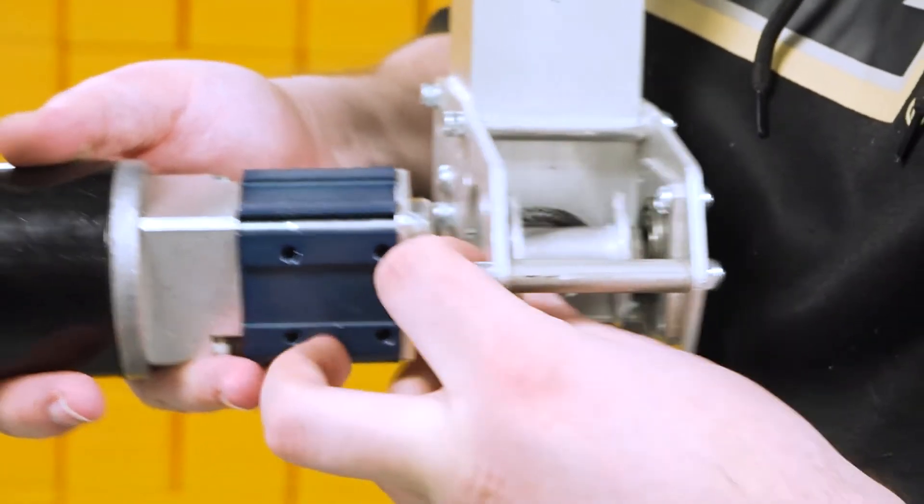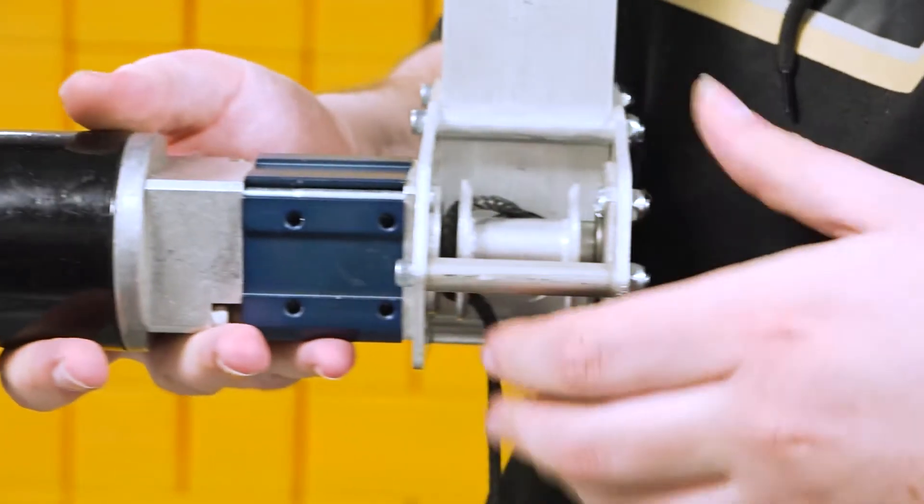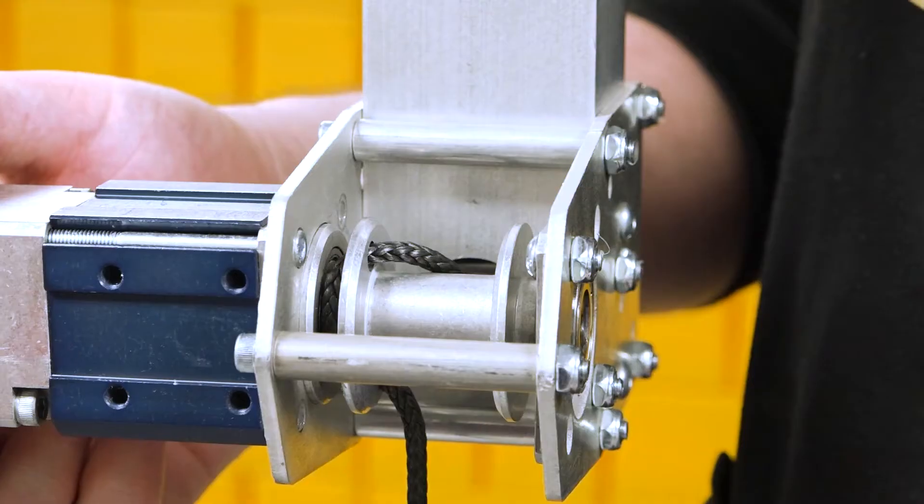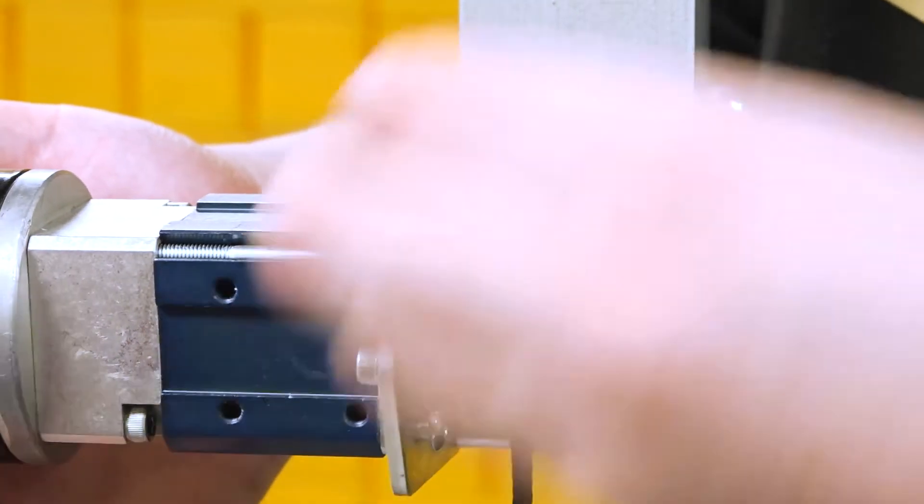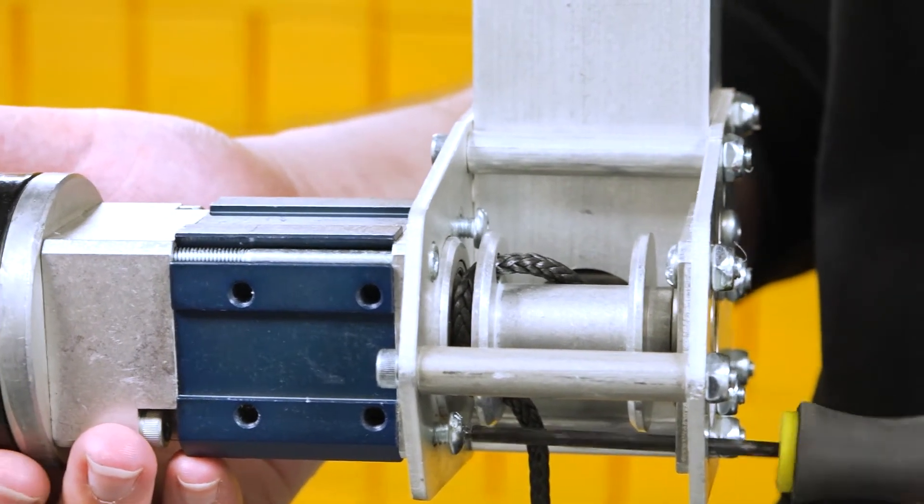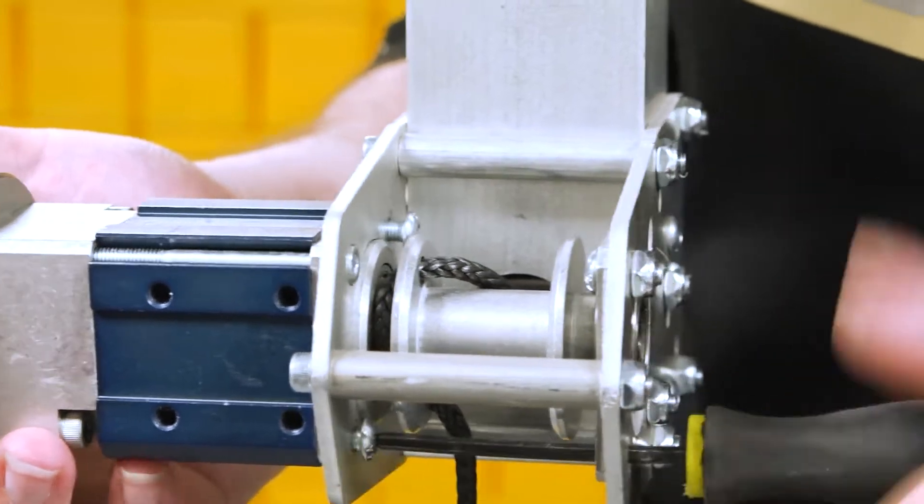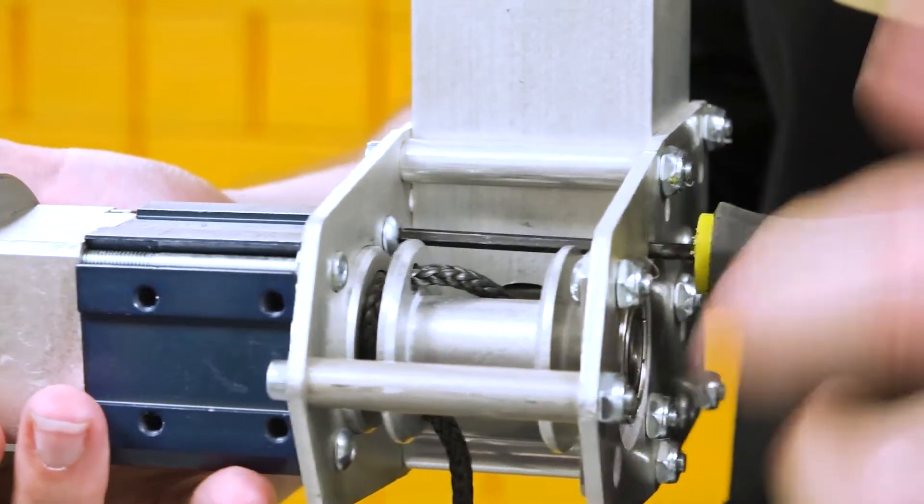Then insert your mounting screws. Once you're sure you're not going to pinch the string, use the through holes on the other side of the plates to screw these in. Try to screw them in as simultaneously as you can so you don't warp anything in the gearbox.